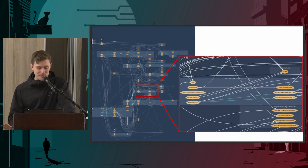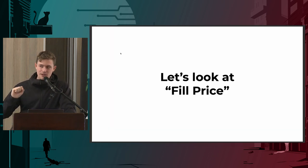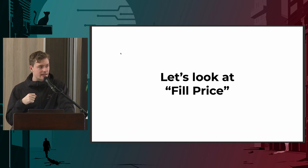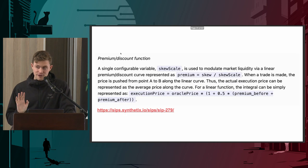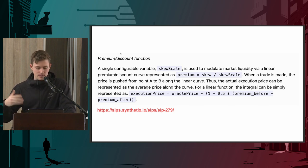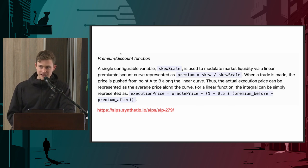It's called fill price. We get given documentation like a premium discount function. What's important is the function: execution price equals oracle price multiplied by (1 + 0.5 × (premium before + premium after)). Let me give you an intuition for what we're trying to do. In a short-skewed market where the short side is larger than the long side, instead of using a price of $200, we artificially lower it to $195.